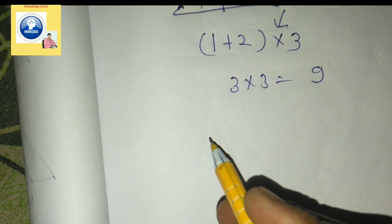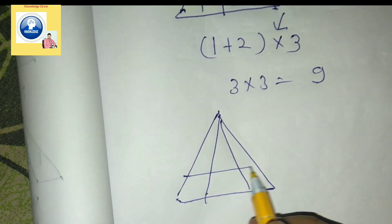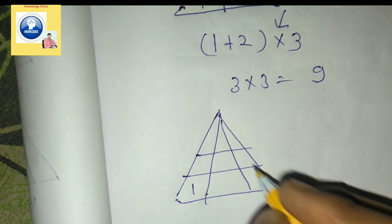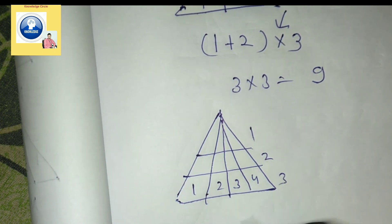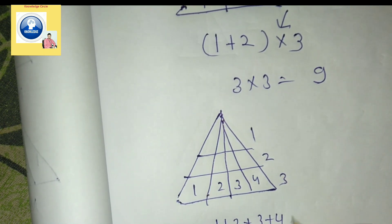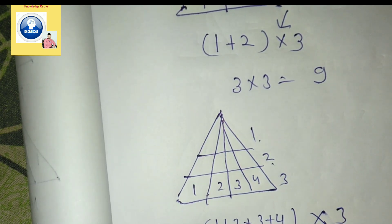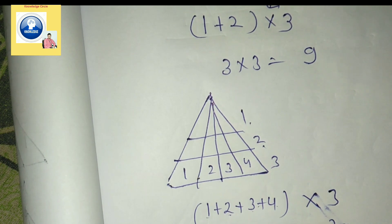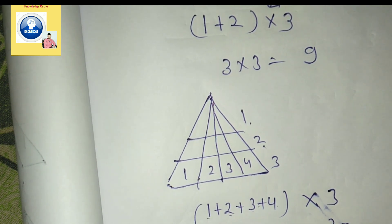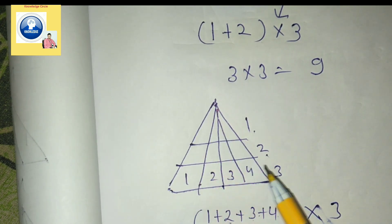Let's have one more example to make it even clearer. Here the figure is divided into three parts, and there are four levels — one, two, three, four. You do one plus two plus three plus four, which equals ten, and then multiply by the number of parts, which is three: ten times three equals thirty. So the number of triangles in this figure is thirty.